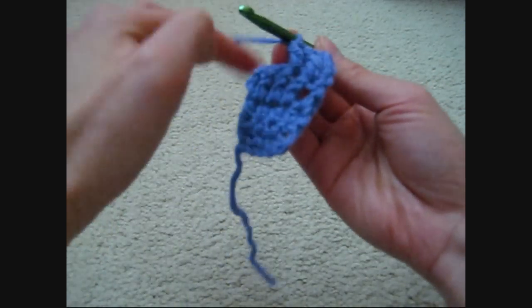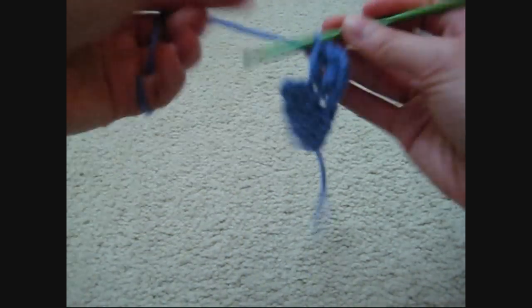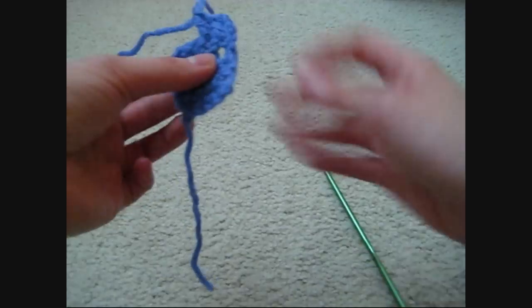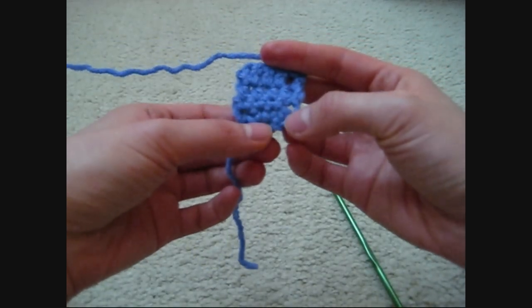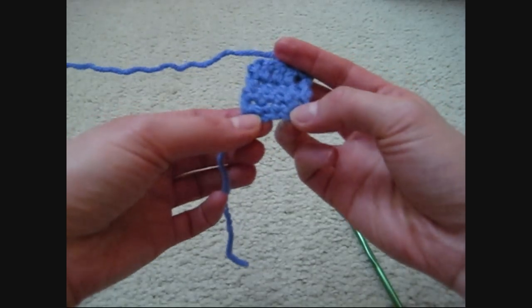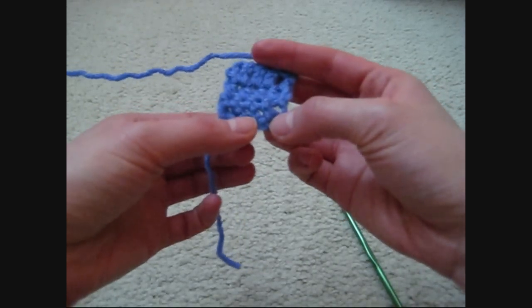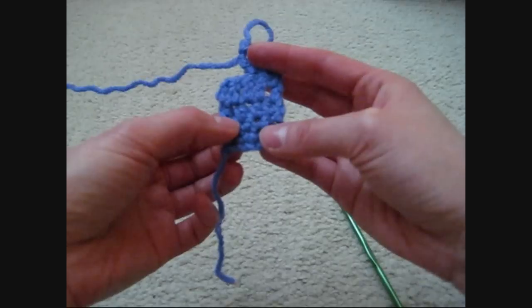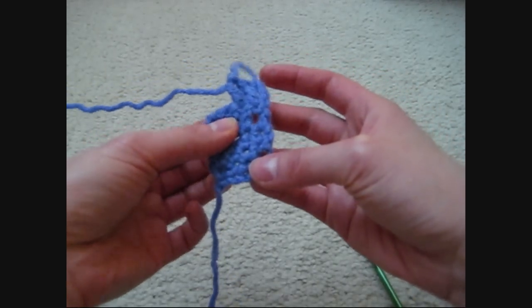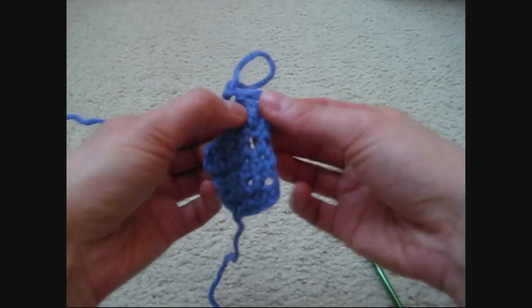That's all you have to do for this. I'm not going to finish the whole thing, but as you can see, the first 2 rows are single crochets and the holes are smaller. As you go through the half double crochet, double crochet, and triple crochet, the holes get bigger.